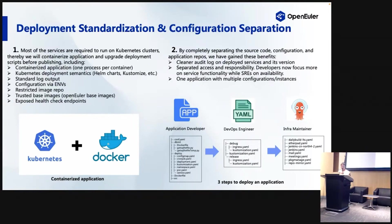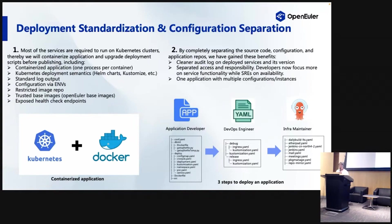We also ask our developers to push images only to our restricted image repositories - we don't use Docker Hub. We have our own private repositories with tools to scan for CVEs and perform checks before deployment. We also ask our developers to use trusted base images, for example the OpenEuler base images, because packages can be easily upgraded when CVE issues are fixed.